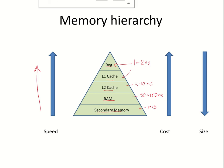Also, as we go up the pyramid, the cost per bit increases. Registers, the L1 cache and L2 cache are usually implemented using the SRAM technology.